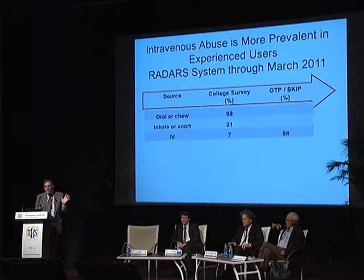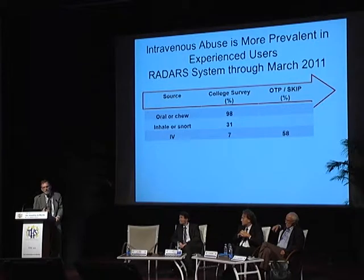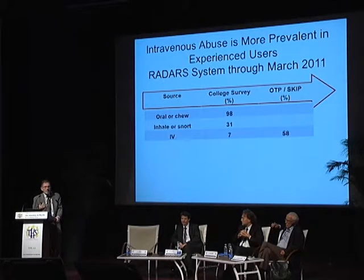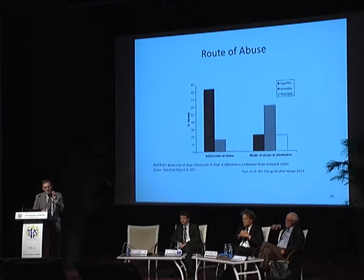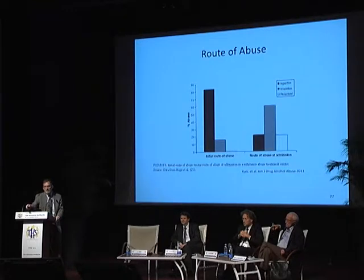How do people abuse these drugs? People early in the course of their abuse, such as college students, 98% endorse oral use; a few snort it, and very few inject it. Whereas if you go to OTP and SCIP, where people have gone into treatment — often court-ordered — you can see that now over half of them endorse IV injection. A study by Nat Katz in Boston shows the same thing: initial route of abuse is almost always oral, but when they get to treatment, they're largely IV.